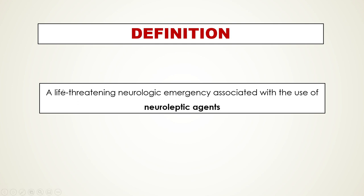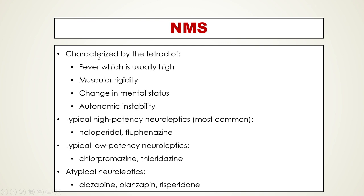Neuroleptic Malignant Syndrome is a life-threatening neurologic emergency associated with the use of neuroleptic agents. This condition is characterized by the tetrad of high fever, muscular rigidity, change in mental status, and autonomic instability. It is most commonly seen with the use of typical high potency neuroleptics such as haloperidol and fluphenazine.